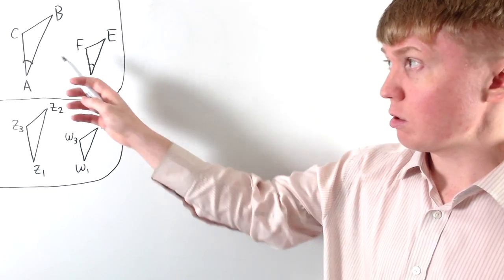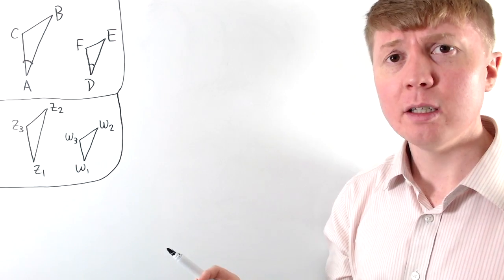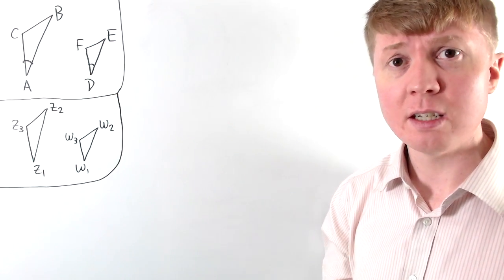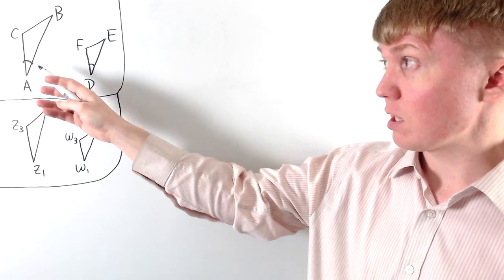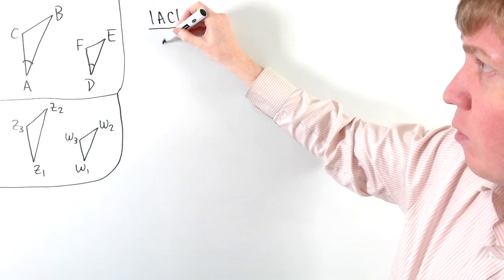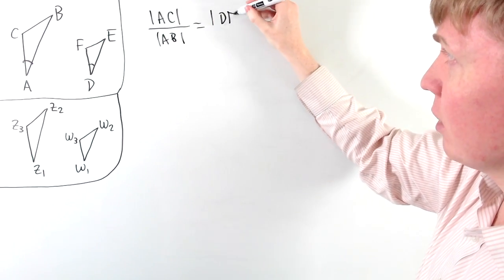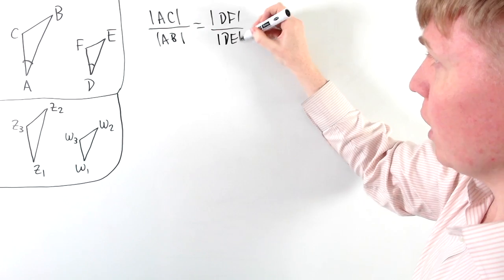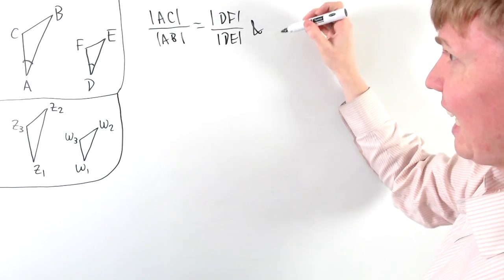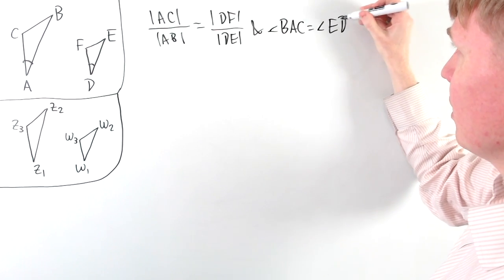One way of telling that two triangles are similar: we'd need the ratio of sides AC and AB to be the same as the ratio DF to DE. So we'd need these pairs of corresponding sides to have the same length ratio, but then we'd also need to have the same angle between them. We can write: the length of AC divided by the length of AB needs to equal the ratio of DF to DE. But we also need angle BAC equal to angle EDF.